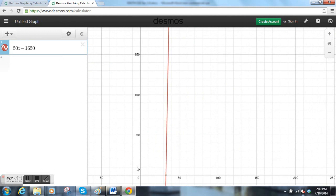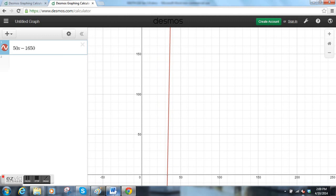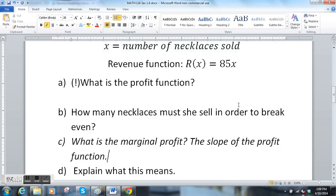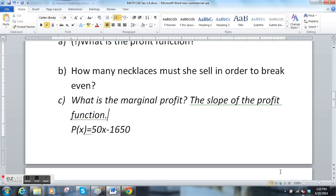It's a pretty steep profit function there. Going back here, if you look at the profit function, we had P(x) = 50x - 1650. This number right here, 50, is the slope because that's the slope and this is the y-intercept. So what is the marginal profit? The answer is 50 because that is the slope of the profit function.